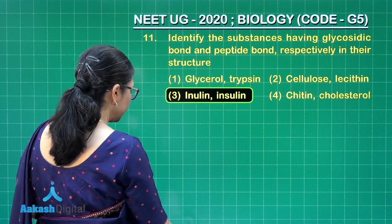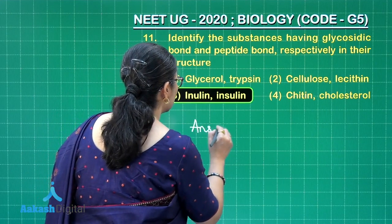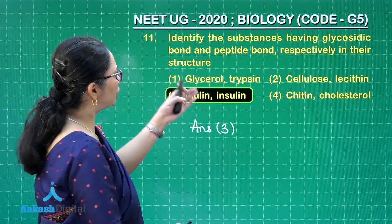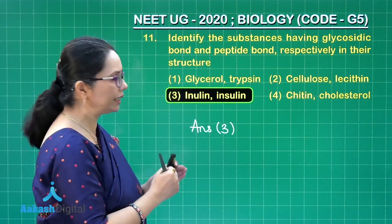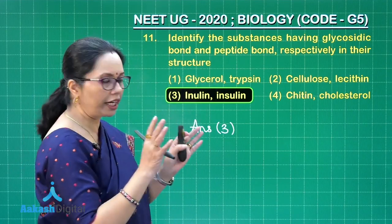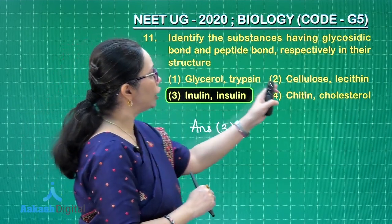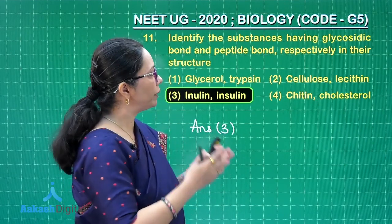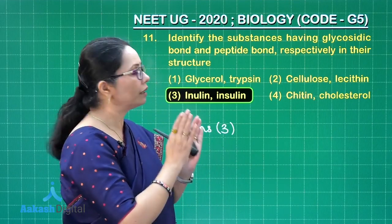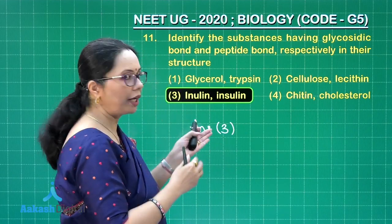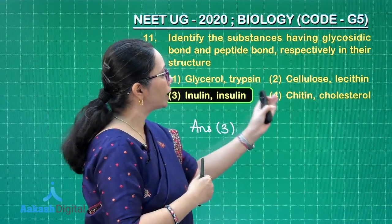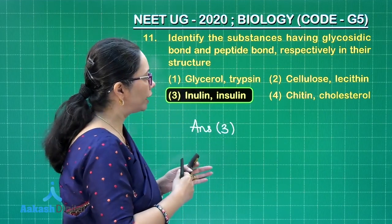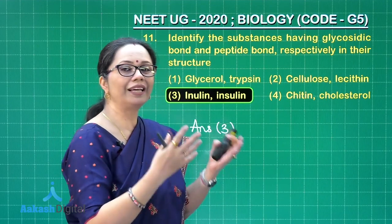As for the other options: glycerol is a trihydroxy alcohol; trypsin is a protein so it has peptide bonds; cellulose has glycosidic bonds, but lecithin is a phospholipid with only ester bonds — no peptide or glycosidic bonds. Chitin is a polysaccharide with glycosidic bonds, but cholesterol is a derived lipid.